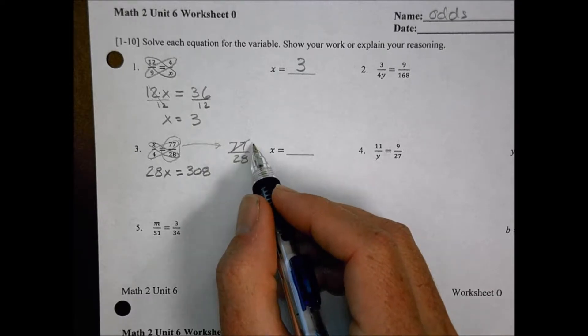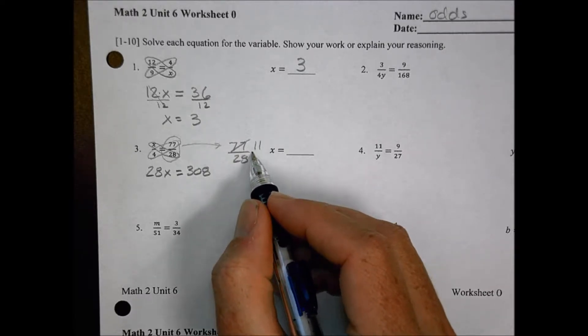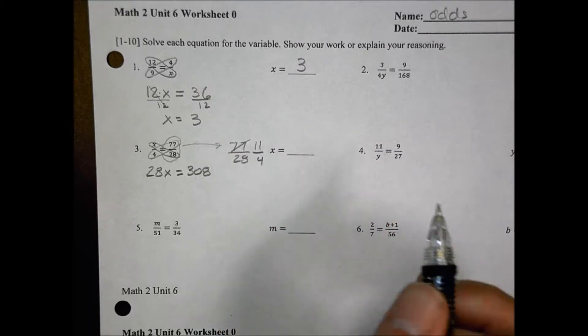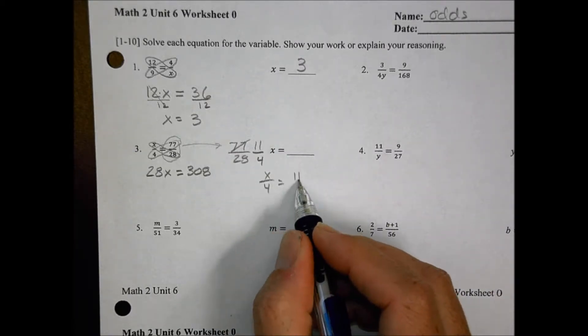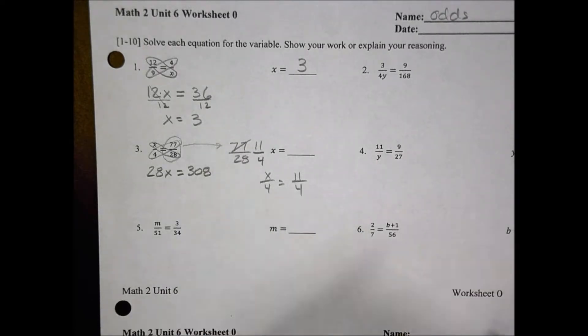So if I have 77 over 28, I could reduce this fraction from the very beginning. 7 goes into 77 11 times, and 7 goes into 28 4 times. So now I'm working with a problem much more like x over 4 equals 11 over 4. Now, that's a little bit easier to work with.